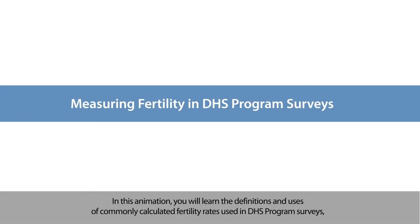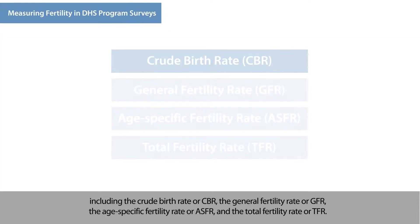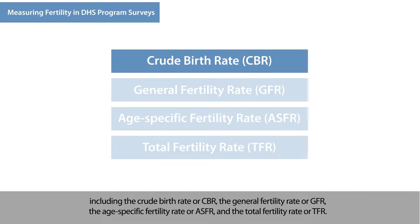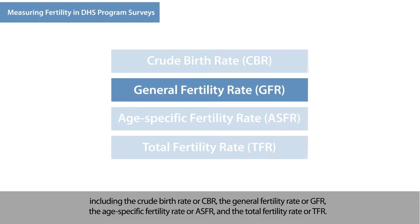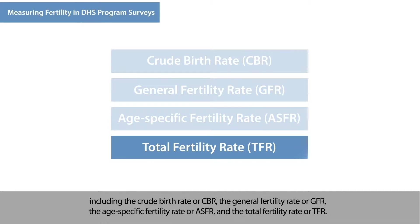In this animation, you will learn the definitions and uses of commonly calculated fertility rates used in DHS program surveys, including the crude birth rate or CBR, the general fertility rate or GFR, the age-specific fertility rate or ASFR, and the total fertility rate or TFR.